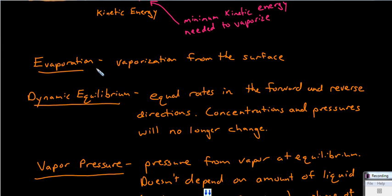Liquids will tend to vaporize from the surface if the particles at that surface have sufficient kinetic energy. The higher kinetic energy particles at the surface might be able to vaporize, and that is called evaporation. Whereas vaporization from throughout the liquid, not just at the surface, would be called boiling, where you're forming bubbles.